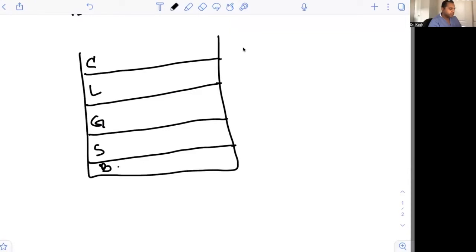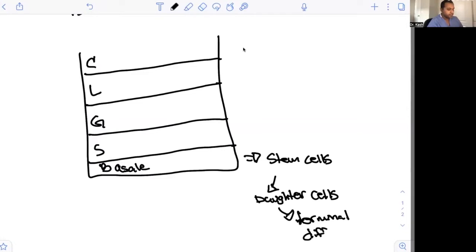The first one is basale. Basale has a lot of foundational cells in its layer because it's the most bottom layer. Everything else builds upon it. So basale has something called stem cells. Stem cells will then break up into daughter cells. Daughter cells will then differentiate, and this is where terminal differentiation takes place, meaning this is when cells know what they're going to do and what their roles are.